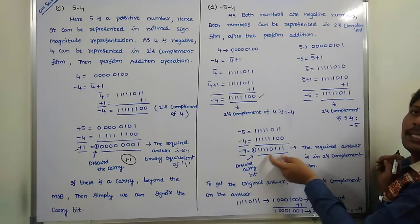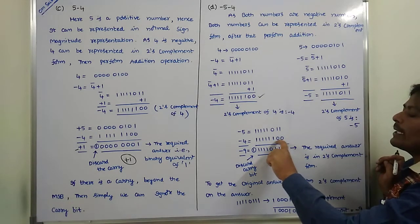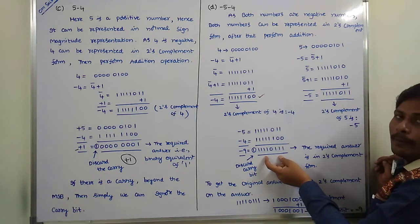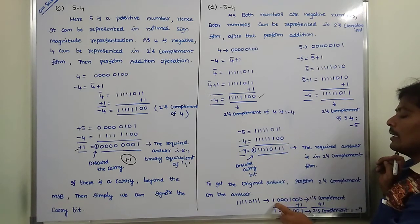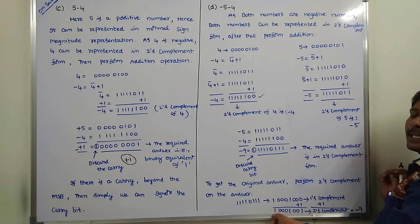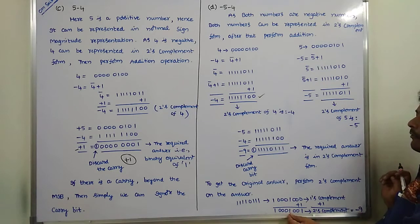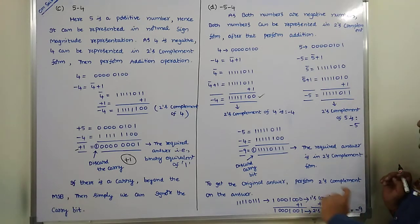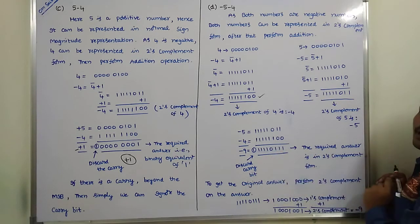Minus 9's binary equivalent is in two's complement form. To get the original answer minus 9 and verify, we perform the two's complement on this answer. First, we perform the 1's complement, then add plus 1. We get this result. The MSB bit value is 1, meaning the sign bit is 1, so it represents a negative number — that is minus. The binary equivalent of 1001 is decimal 9, so the answer is minus 9. This is for verification purposes only. The answer in two's complement form is sufficient — minus 9 can be represented in two's complement form.